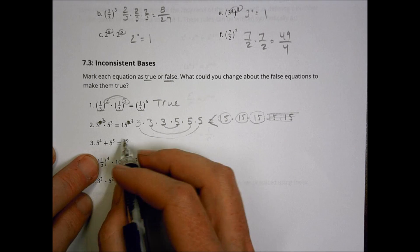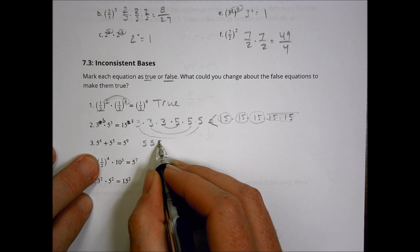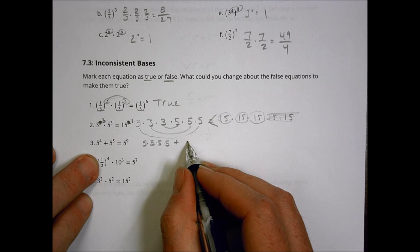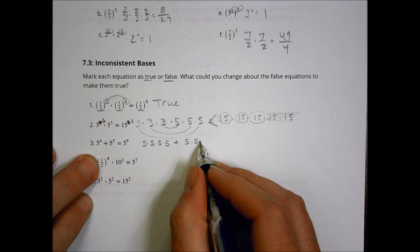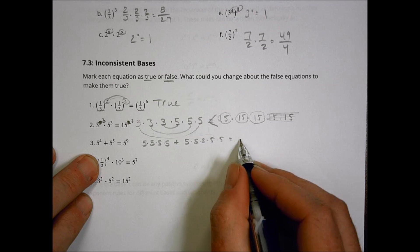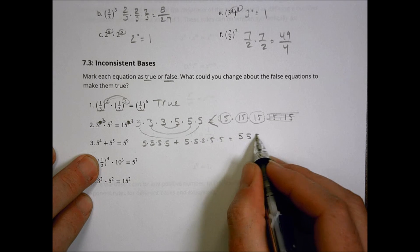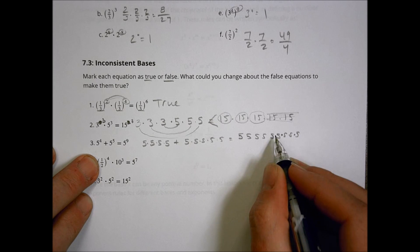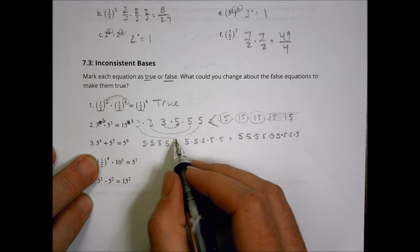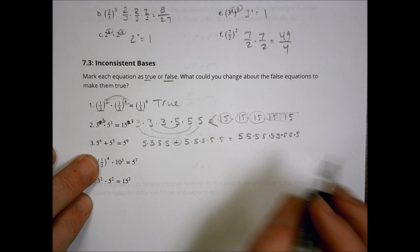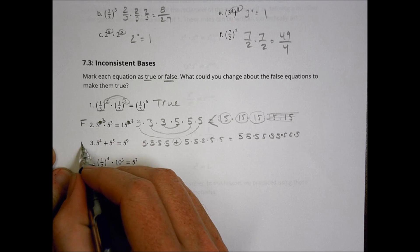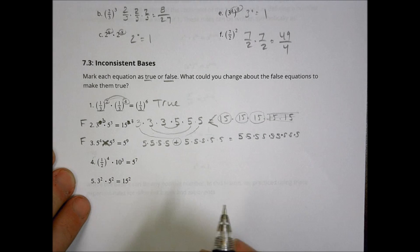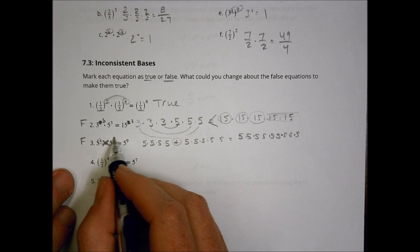Number three has five to the fourth — four fives multiplied together — added to five to the fifth — five fives multiplied together — equaling nine fives all multiplied together. We're going to have a difference here because of that addition statement. This is not going to be true; it's another false one. If we wanted it to be accurate, we should turn this into multiplication, and then we can combine them together to make it true.